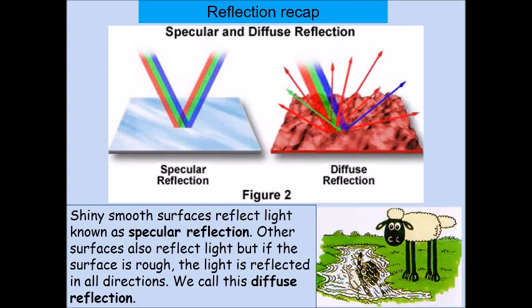We had two types of reflection in yesterday's lesson: Specular Reflection and Diffused Reflection. Specular was reflections off smooth, shiny surfaces, like a reflection on a smooth, flat lake. And Diffused Reflection was reflections off a stormy, rough lake, where the light is reflected in all directions.